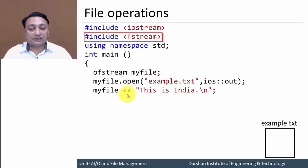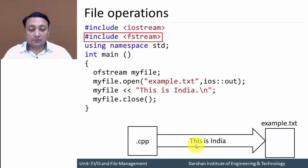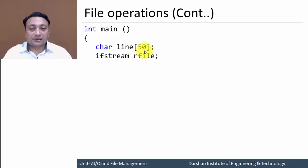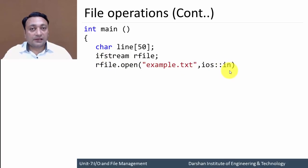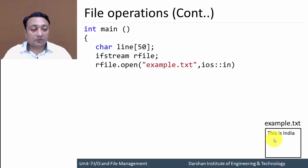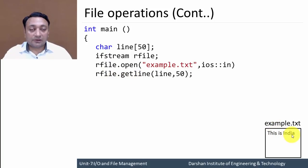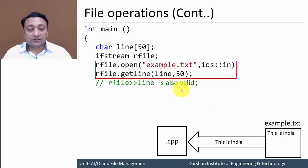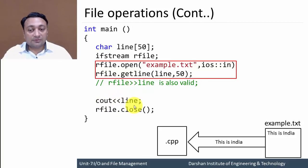Next, I am inserting a message using the insertion operator: "This is India". This statement will move the message from the program to example.txt. In another example, I am creating a character array line of size 50 and an object rfile of class ifstream. I open the file in reading mode using rfile.open with ios::in. The file example.txt contains existing data "This is India". Using rfile.getline, we get data from the file into the variable line. We can also use the extraction operator. Finally, I display the inputted line using cout and close the file.